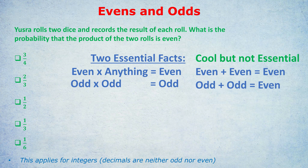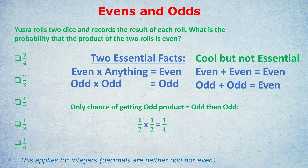How can the product be odd? There's only one way: an odd result times an odd result. What's the probability that Yuzuru rolls an odd answer for her first roll? Well, there are three odd numbers on a die — one, three, and five — so it's three out of six, which is a half.